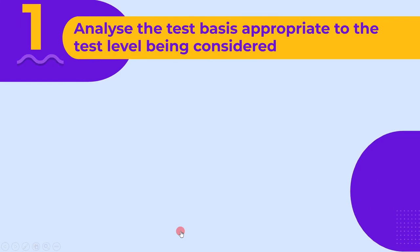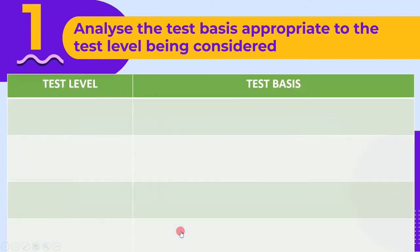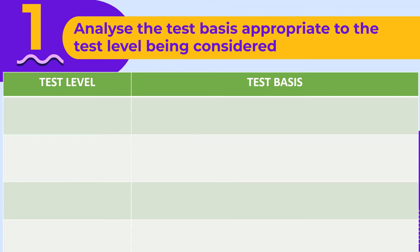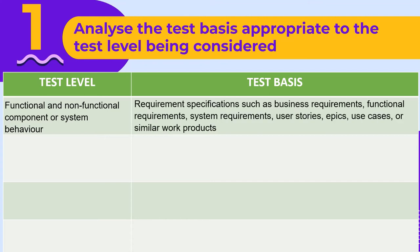The first activity is to analyze the test basis appropriate to the test level being considered. We will see different test levels and their corresponding test basis. Suppose you want to test functional and non-functional component or system behavior. In this case, you may get a test basis in the form of requirement specifications, such as business requirements, functional requirements, system requirements, user stories, EPICs, use cases, or similar work products.